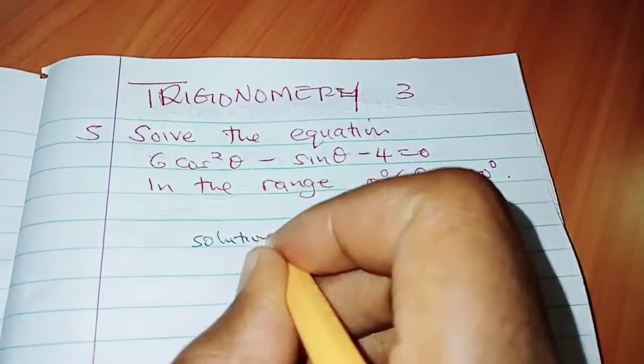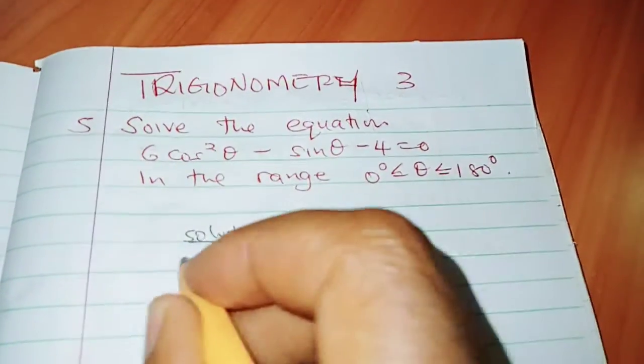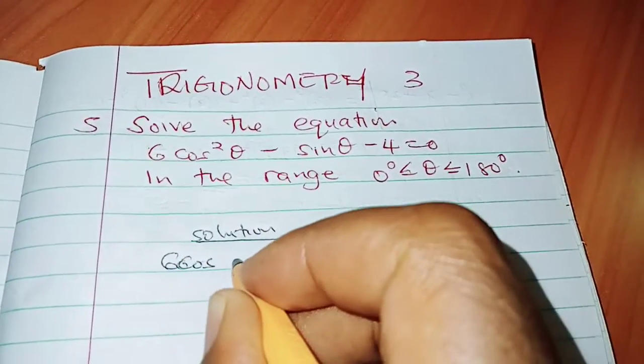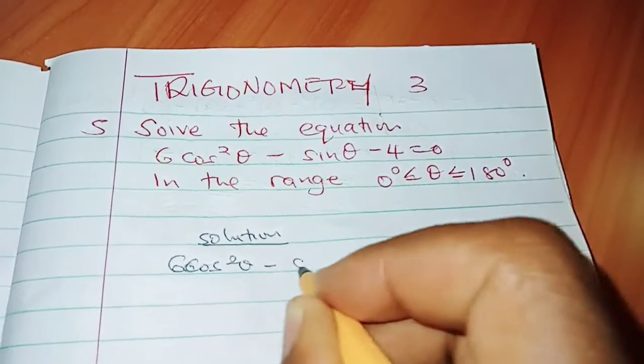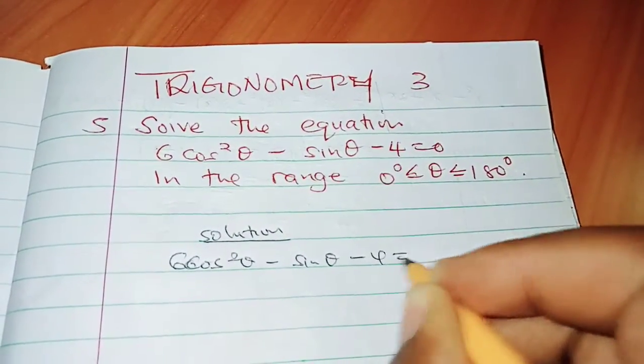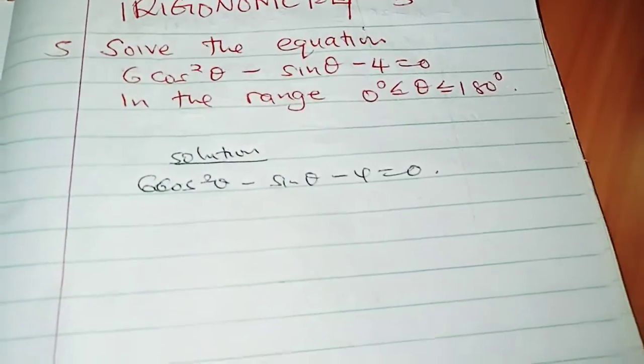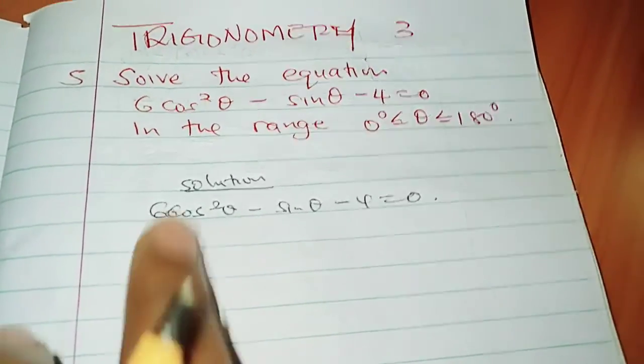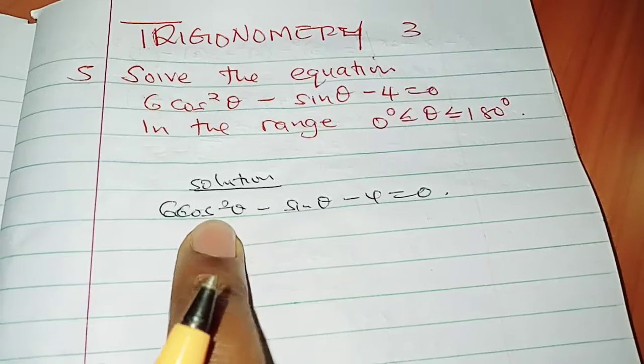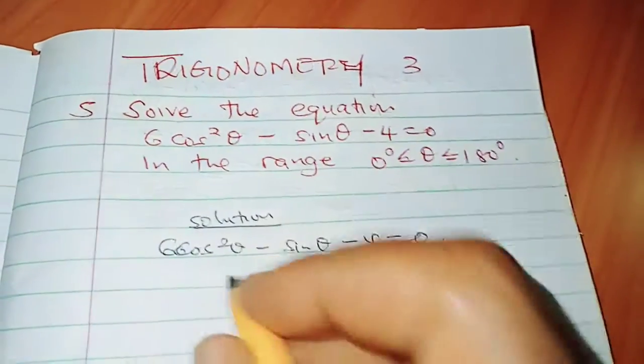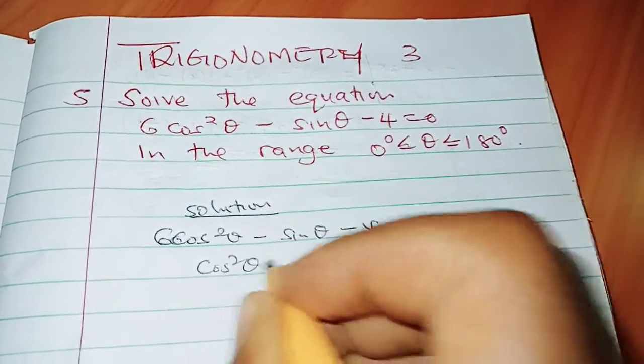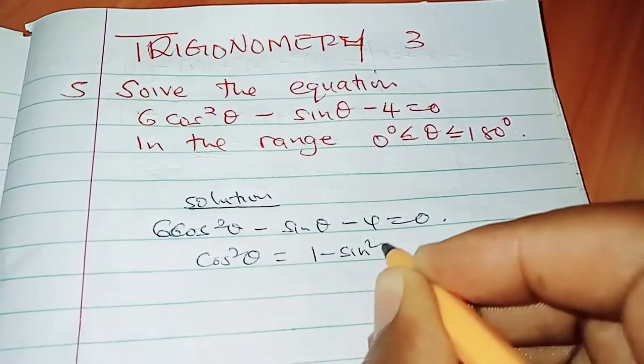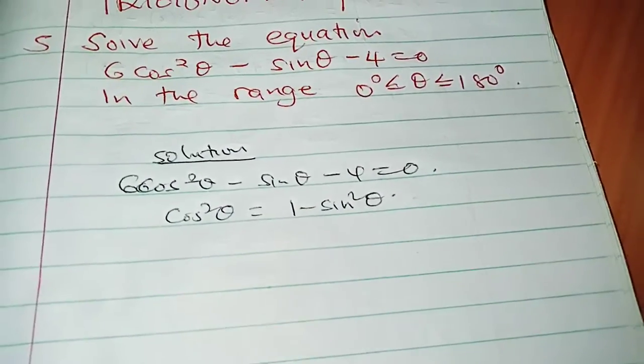We have our solution. We are told that we have 6cos²θ - sinθ - 4 = 0. This is a type of quadratic equation in the form of trigonometric function, so we need to remember that cos²θ can be written in the form of 1 - sin²θ. That's the beginning of this problem.